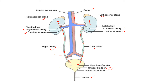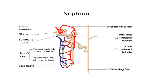Inside the kidney, blood is filtered. The kidney contains a large number of nephrons. Nephrons are the functional unit of the kidney. The functional unit of the excretory system is the kidney, and the functional unit of the kidney is the nephron. Now let's see how blood is filtered inside a nephron. Each nephron has a cup-shaped structure called Bowman's capsule.